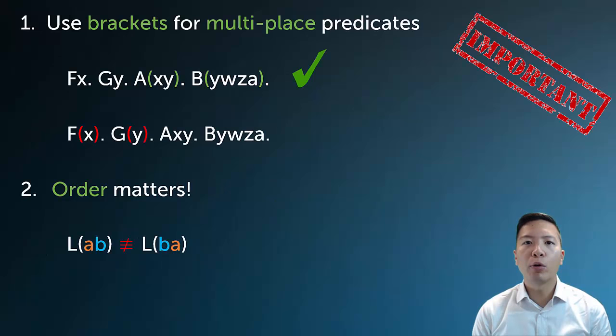Before we begin, we should point out the syntactical differences between multi-place and single-place predicates. In single-place predicates, we would always have the predicate followed by the subject, and we would never use brackets. In multi-place predicates, we always use brackets to contain the subjects or the places together, so we will never see something like F bracket X bracket because that's single place, and we will see things that look like A bracket XY closed bracket.